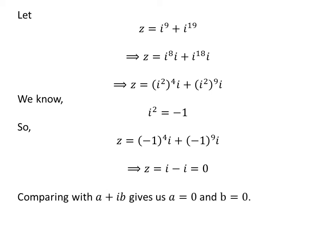Comparing z with a plus i times b gives us a is equal to 0 and b is equal to 0.